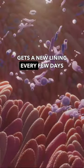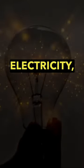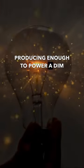Your stomach gets a new lining every few days to avoid digesting itself. The brain operates on electricity, producing enough to power a dim light bulb.